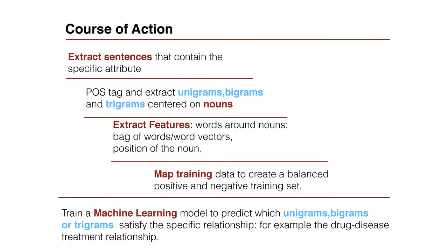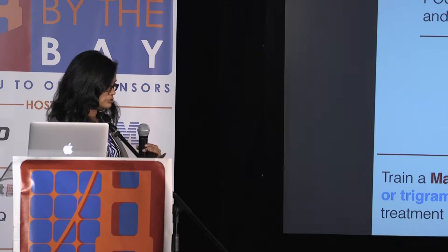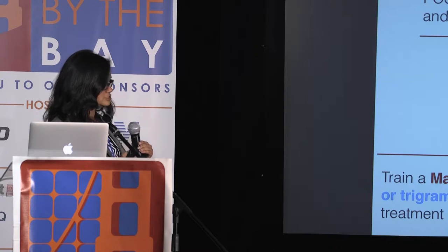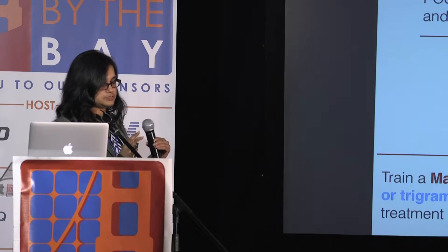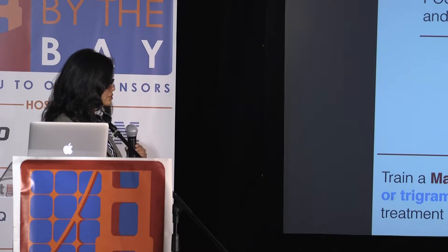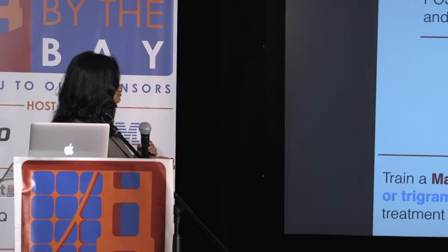The course of action was to first extract the sentences that contained the relevant data. In the next phase, use POS tags to get the candidates that might be diseases — specifically nouns and noun phrases, bigrams or trigrams around nouns. Then extract features. When you read enough of these sentences, you realize the disease treated by a drug is typically in a particular syntactic format. So the context of the word is very important in figuring out whether it's a disease the drug was treating, and the position also seemed important.